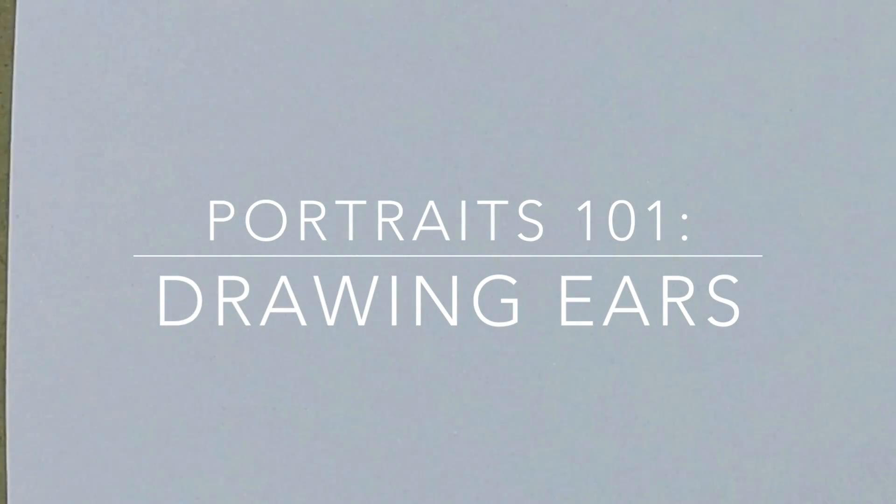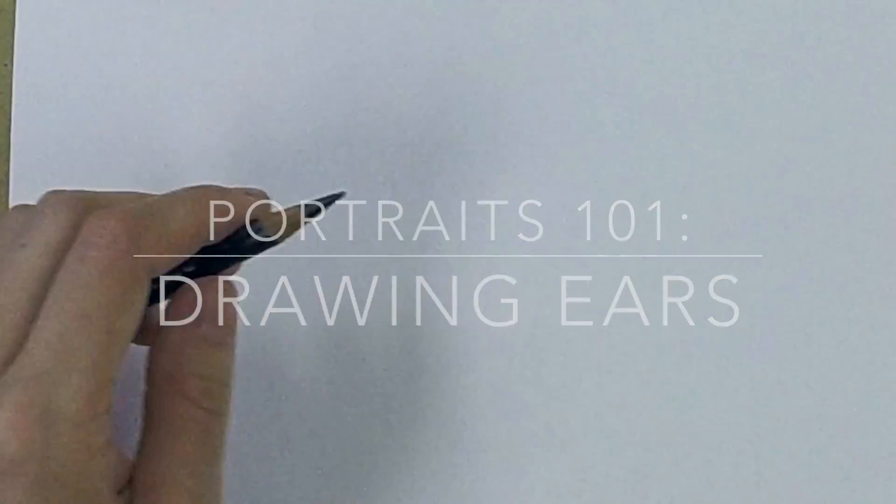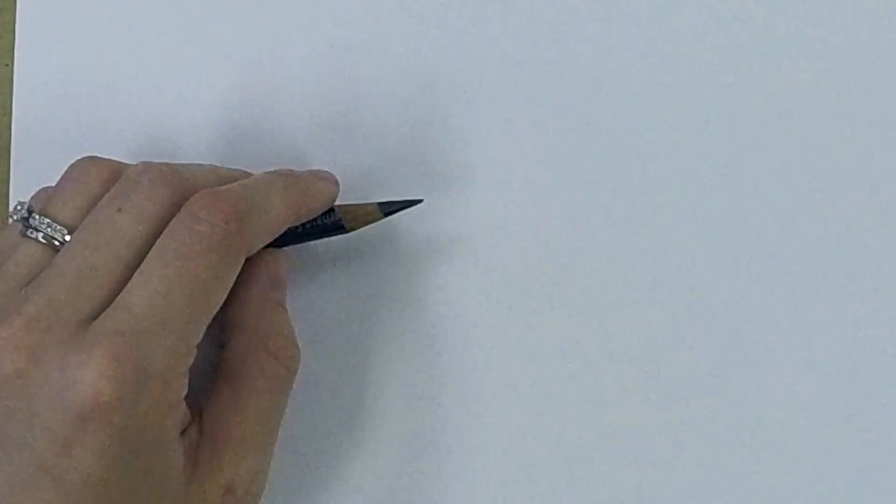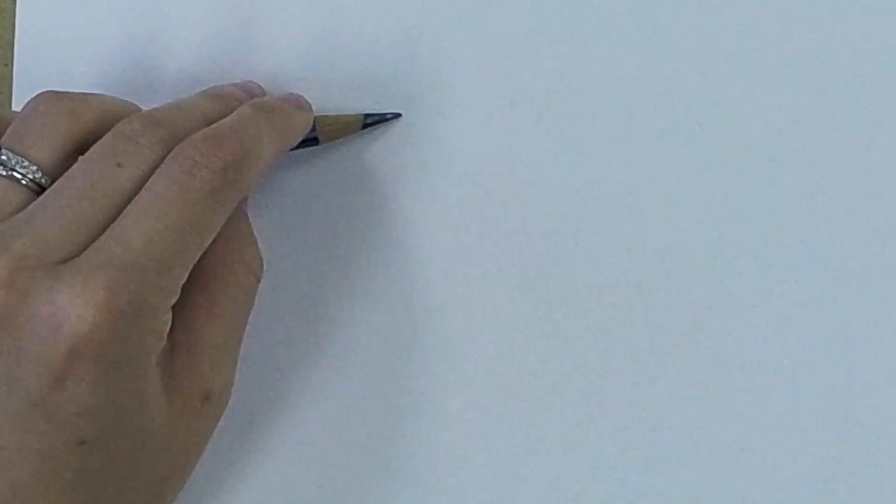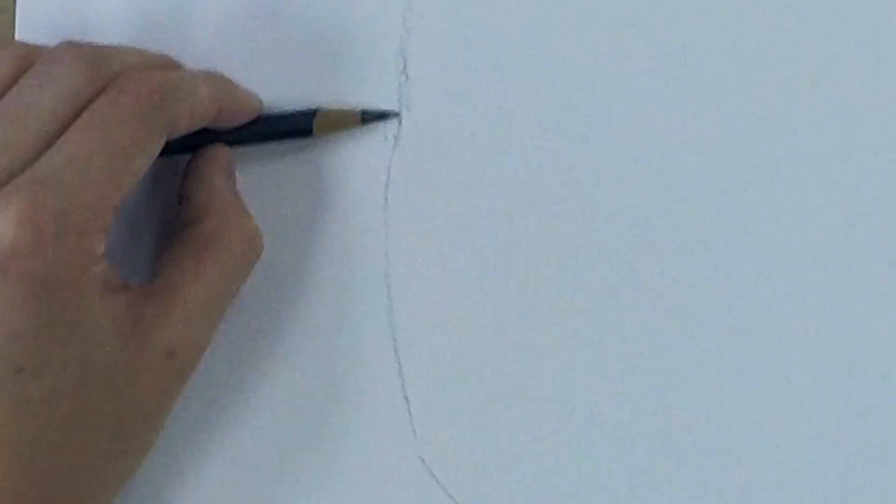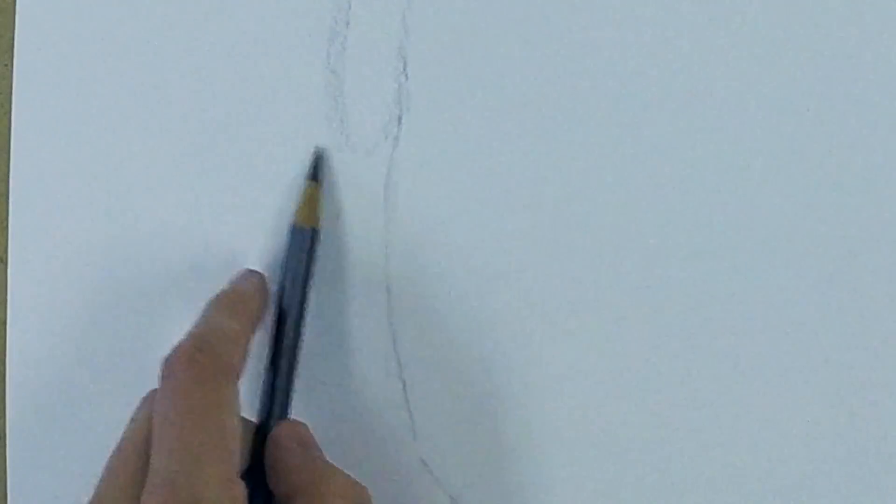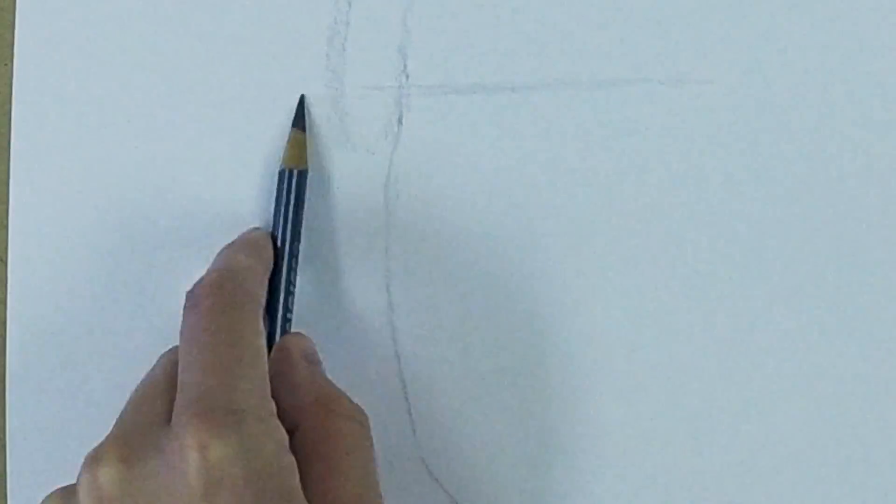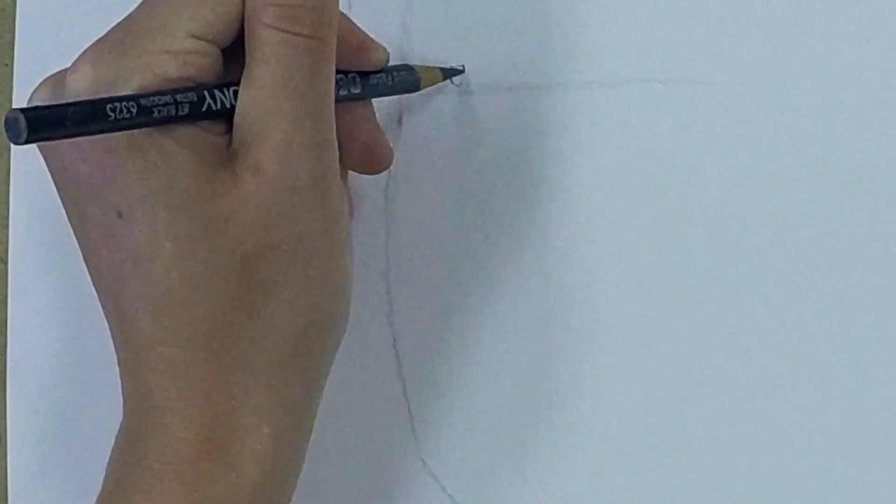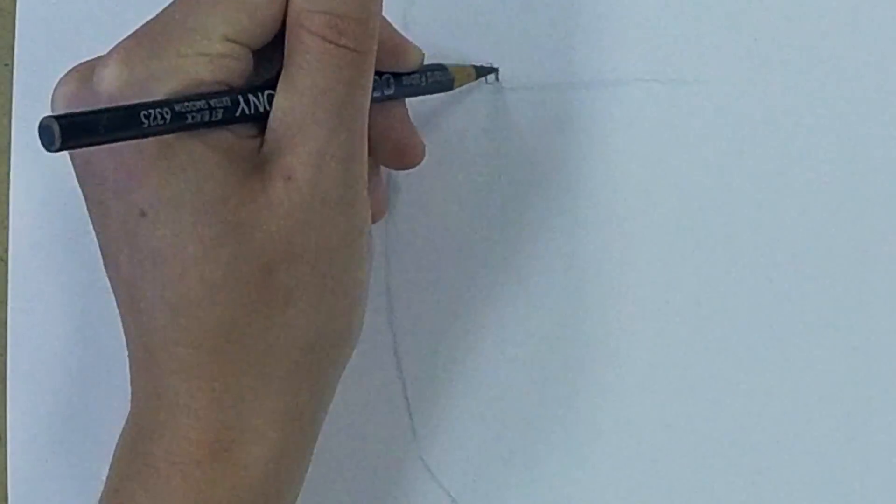Hello, in this tutorial we're going to be talking about drawing ears, the scariest of facial features. To start, I'm going to draw just a basic jawline of a person to give us an idea of where things are at. We have a line here for the eyebrow because we can recall the ear lines up with the eyebrow and the bottom of the nose.